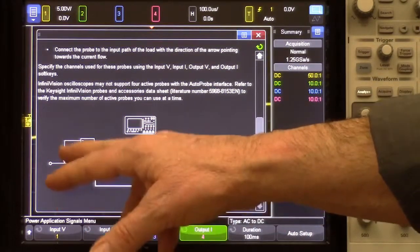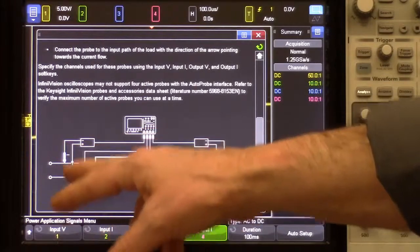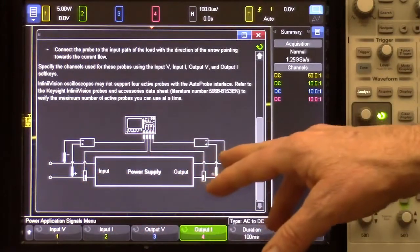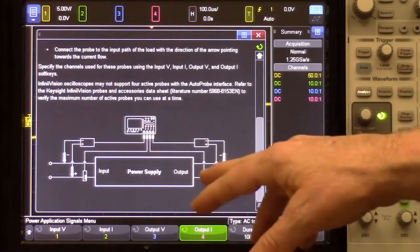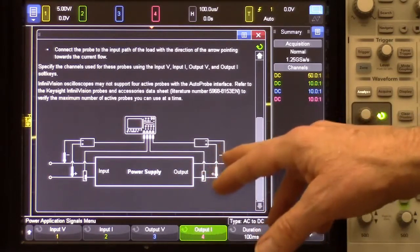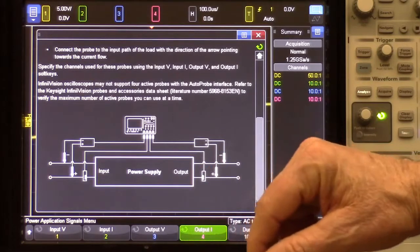Since I have AC input, I've got to use a differential active probe on the input and a current probe on the input. For the output voltage, I'll just use a 10 to 1 passive probe, and then another current probe on the output.